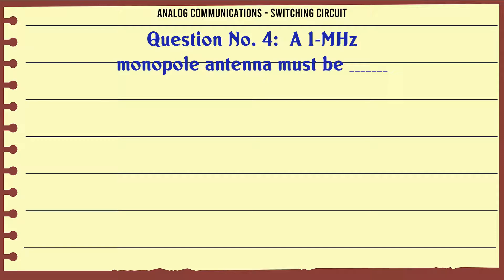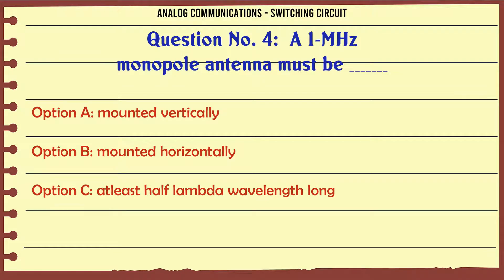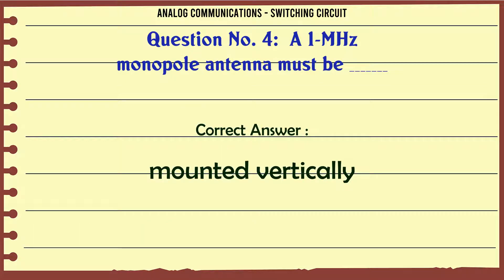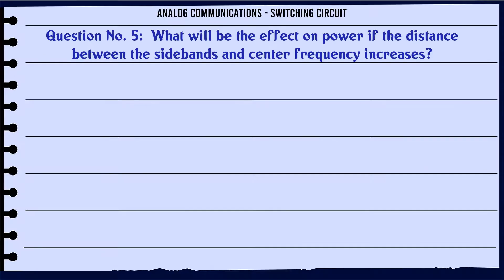Question: A 1 MHz monopole antenna must be. Option A: Mounted Vertically. Option B: Mounted Horizontally. Option C: At least half lambda wavelength long. Option D: At least lambda wavelength long. The correct answer is Mounted Vertically.